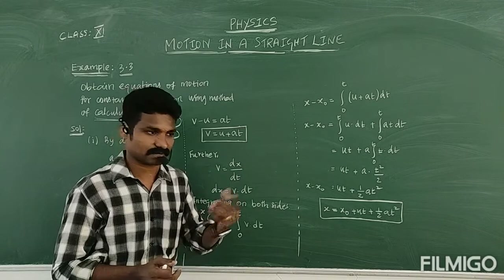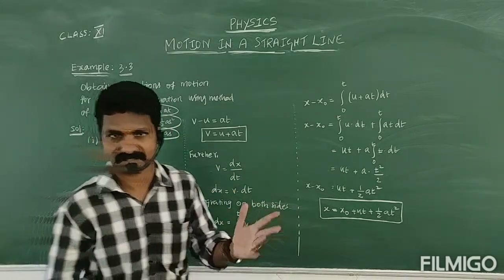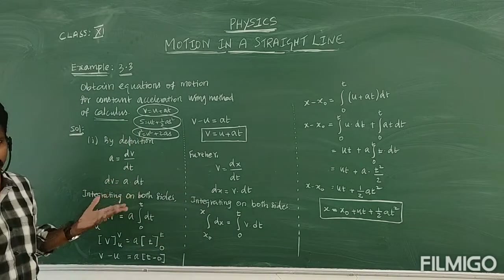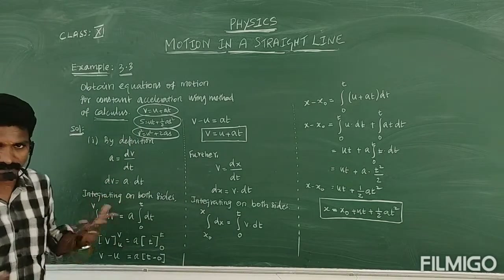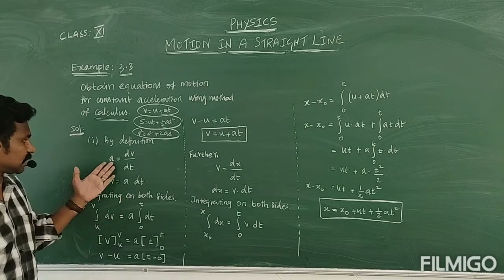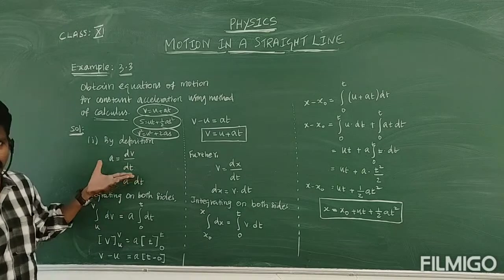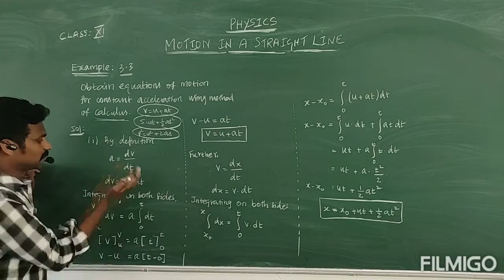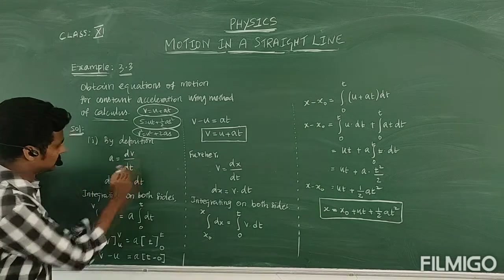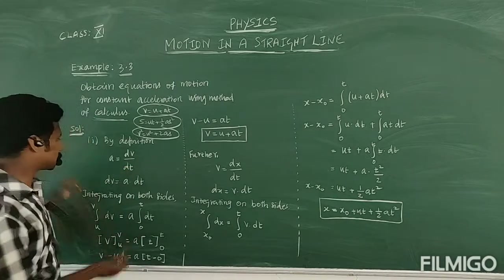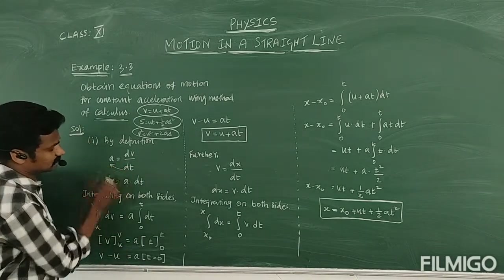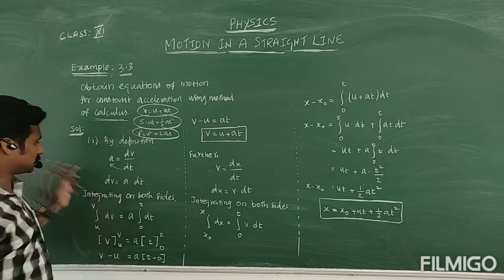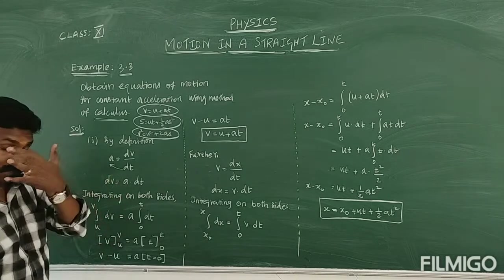Let's take the acceleration definition. By the definition of acceleration, there is a change in velocity with respect to time. So acceleration is equal to change in velocity divided by change in time. Therefore, acceleration into the change in time is equal to dV.